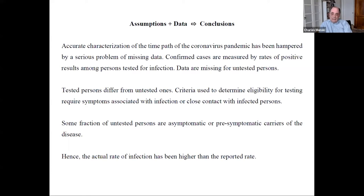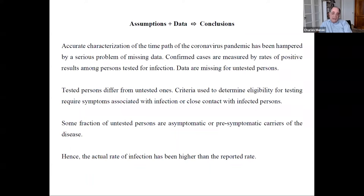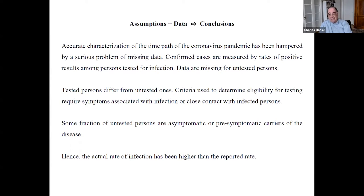I'm sure everybody knows that with testing not that readily available, there are stringent criteria used to determine eligibility — either you have to have symptoms associated with infection, and in many places quite severe symptoms, or you have to have had close contact with infected people. The fraction of people tested across the United States is roughly about 1%, so about 99% of people have not been tested.